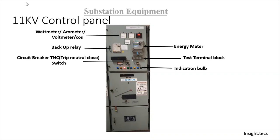Here also, we have indication bulbs. One key difference between the 66 kV panel and the 11 kV panel is that in the 11 kV panel, we have the circuit breaker inside the panel itself. For higher voltage levels, the circuit breakers are in the switch yard. But for 11 kV, the circuit breaker is inside the panel, and also the PT is inside the panel — but only for incomers. That is, only if the panel is for a transformer will the PT be inside the panel. For line panels, we do not have PT inside the panel.